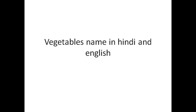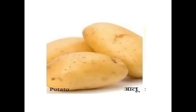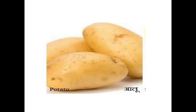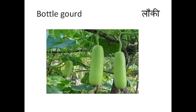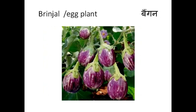Let's start. Potato — potato means aloo. Onion — onion means piyaj. Bottle gourd — bottle gourd means lauki. Brinjal or eggplant means bangan.